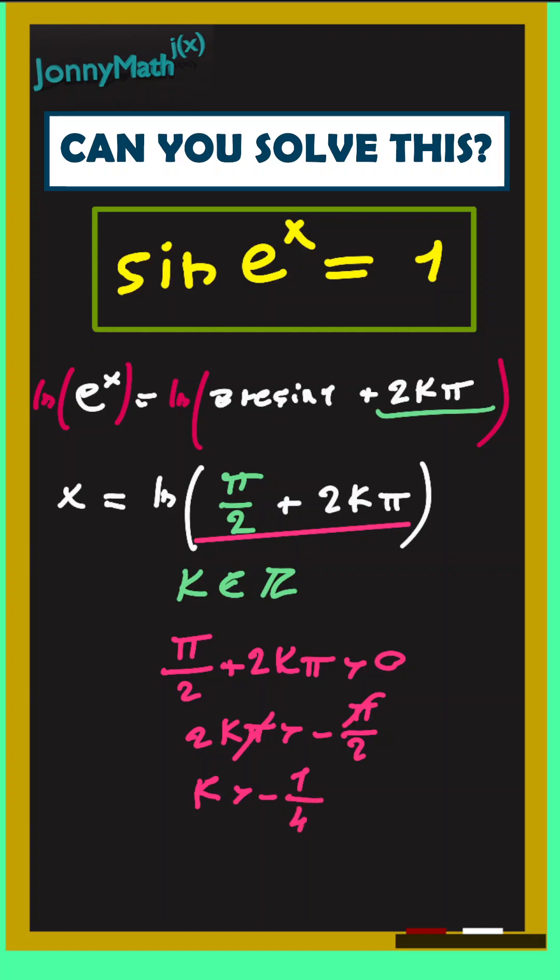But we know that k has to be an integer. So, we know that minus 1 is less than minus 1 over 4, that it is less than 0. So, k has to be an integer and also k has to be greater than or equal to 0. So, we know that k has to be a natural number.